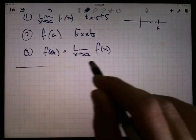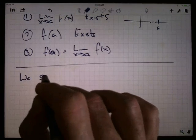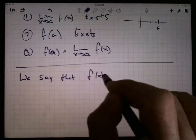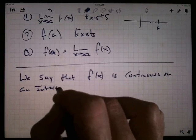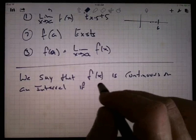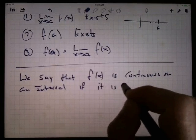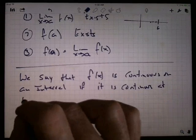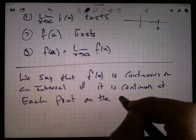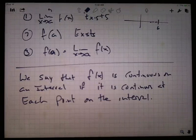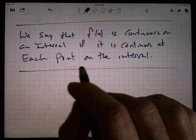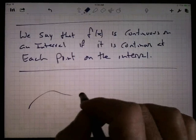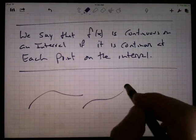A further definition: we say that a function f(x) is continuous on an interval if it is continuous at each point on the interval. Generally, we talk about it being continuous on intervals — it may be continuous for a while on one interval, and then maybe there's a break and it's continuous again for a while.